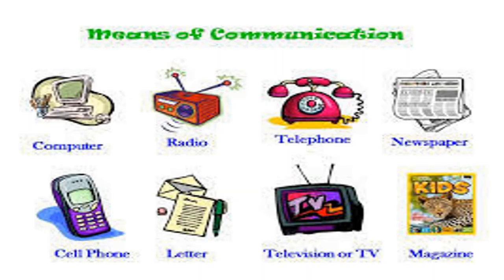Students, what can you see on the screen? Yes, you can see here various means of communication — like computer, radio, telephone, newspaper, cell phone, letter, television or TV, and magazine. Students, they all are very important means of communication. Aur in ki help se hum ek baar mein kai logon ko message bhej sakte hain. TV shows different programs for children and adults on various topics. And on radio, hum news aur songs sunte hain.